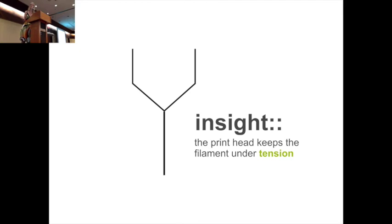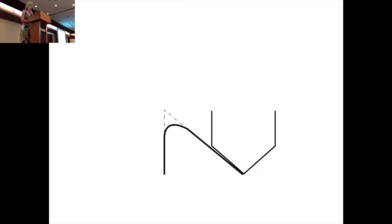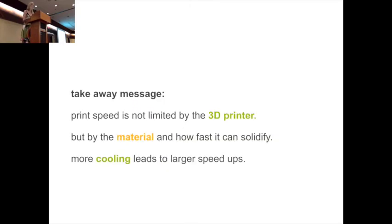We were actually wondering why does the pause perform best. The insight we gained here is that the print head actually keeps the filament under tension, so it's straight and it does not sag as long as the print head moves in the correct direction. Only when the print head actually changes direction you see these deformations happening and the tension is gone. This is why pausing works best, because the print head only pauses when we change direction and otherwise we go full speed. The takeaway message here is basically the print speed is not limited by the 3D printer itself but by the material and how fast you can cool and solidify it. More cooling will lead to larger speedups.